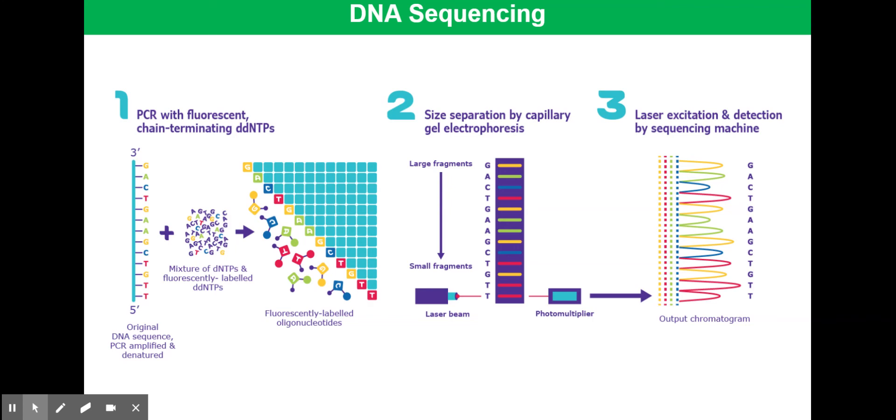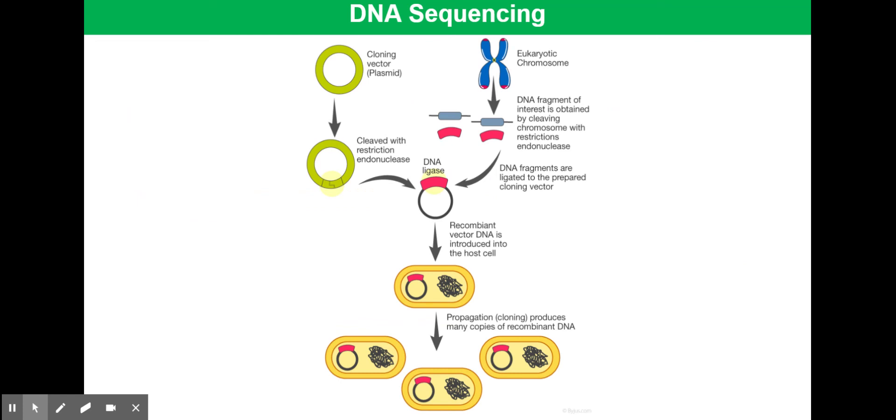We're now just going to quickly run over how you can clone DNA for this kind of method. The gene to be sequenced first needs to be isolated using restriction enzymes from a bacterium. The DNA is then inserted into a bacterial plasmid, which is the vector.